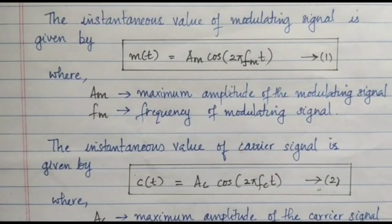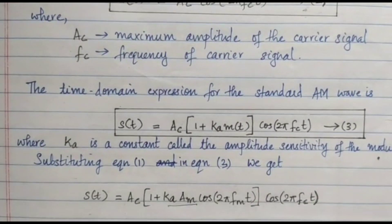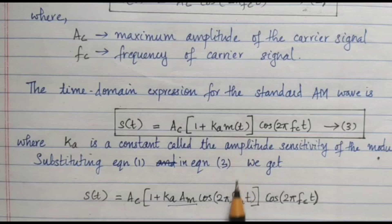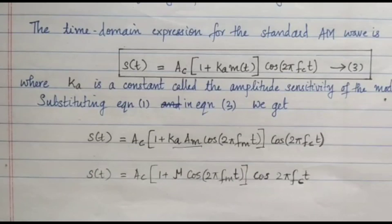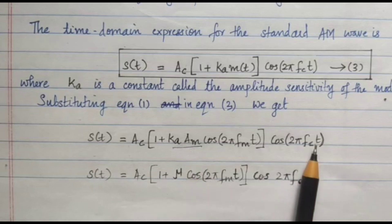Equation 1 stands for the message signal M(t) = AM cos(2π FM t), which we substitute into equation 3. So when we substitute, we get S(t) = AC [1 + KA · AM cos(2π FM t)] cos(2π FC t). We can write KA · AM as μ, giving S(t) = AC [1 + μ cos(2π FM t)] cos(2π FC t).